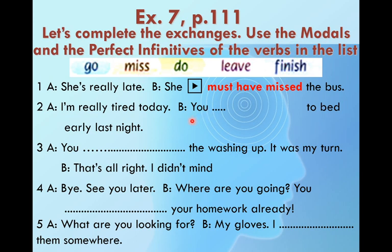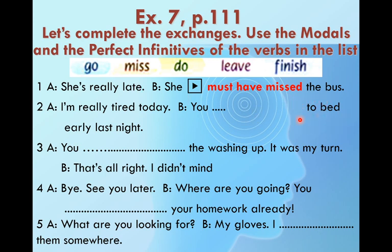She's really late — она опоздала, не успела на автобус. When we are certain, we choose must. The next: I'm really tired today — you... to bed early last night. The verb phrase is 'go to bed'. This clearly calls for advice, so: you should have gone to bed early. Notice the perfect formula repeats throughout.